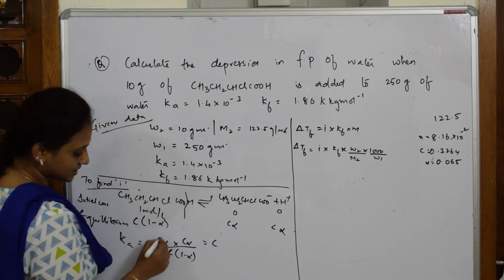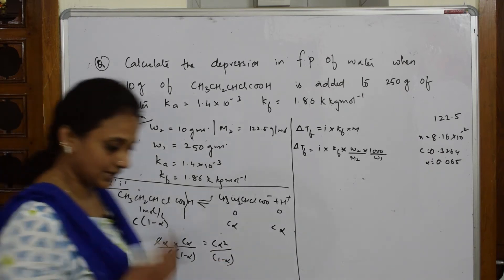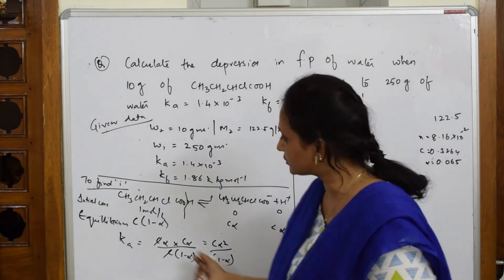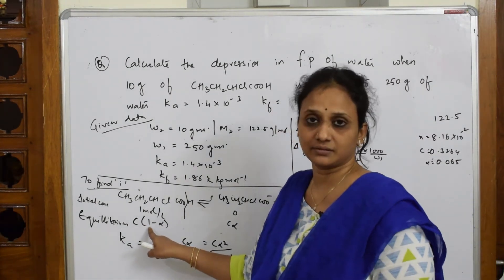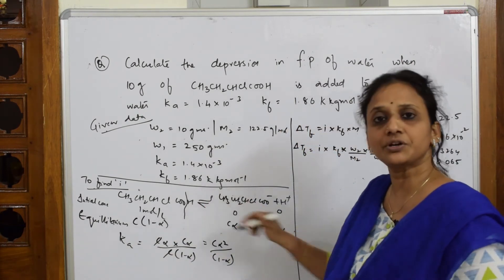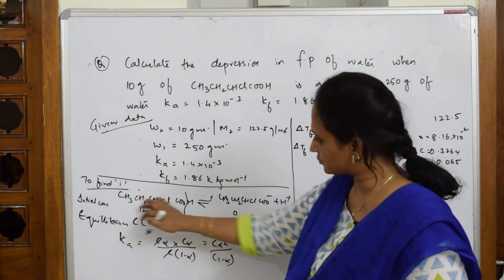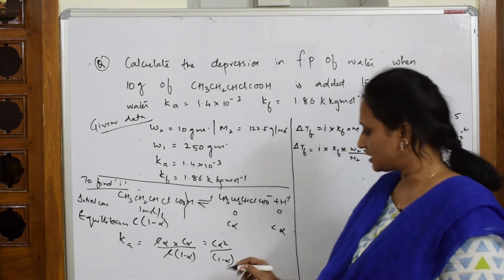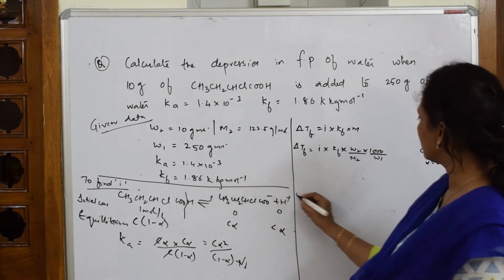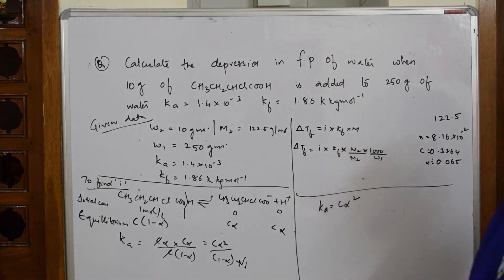Since (1−α) is very small — meaning most of the acid has dissociated — we can neglect it. This simplifies the expression to Ka ≈ cα², which makes the calculation much easier.